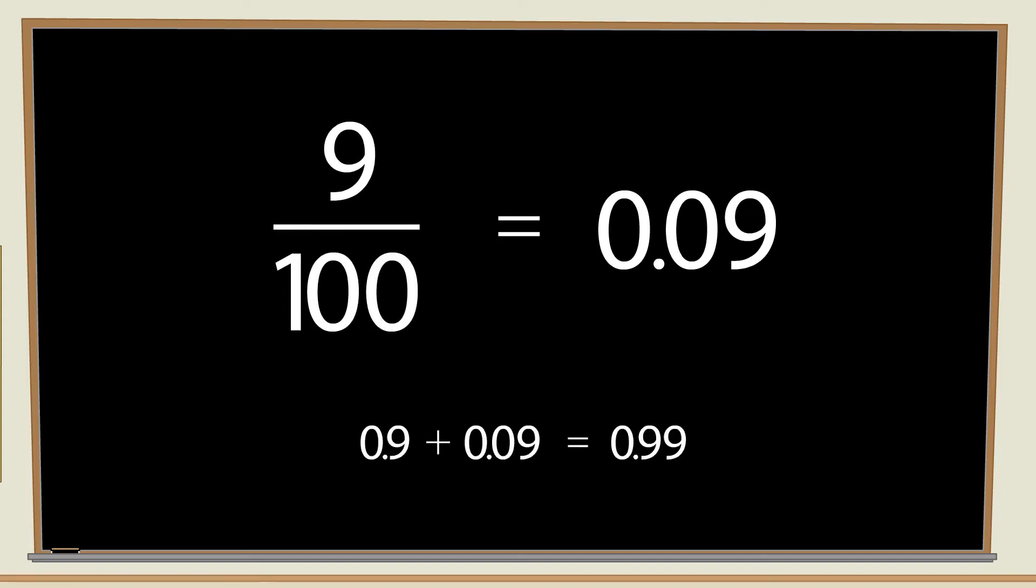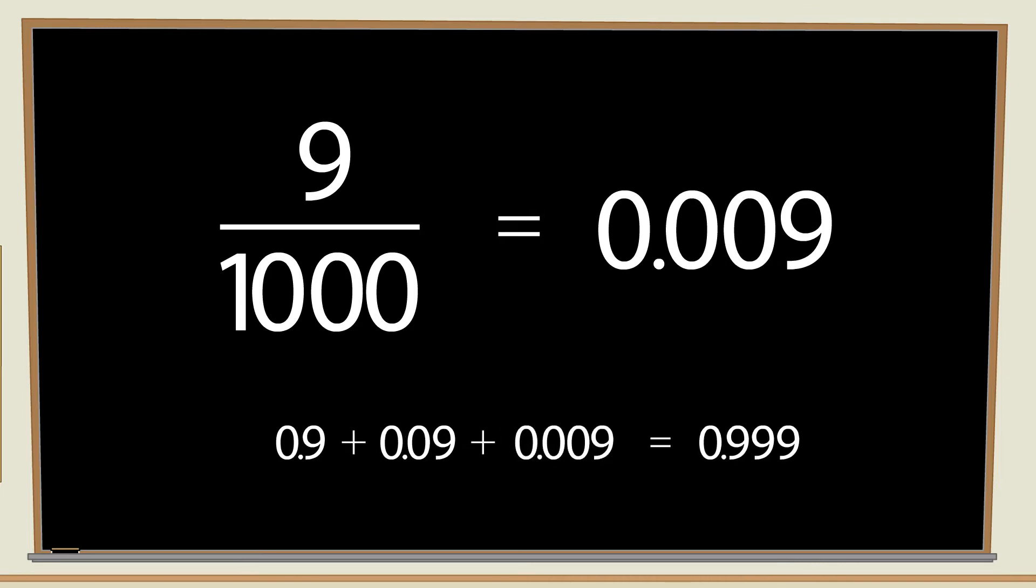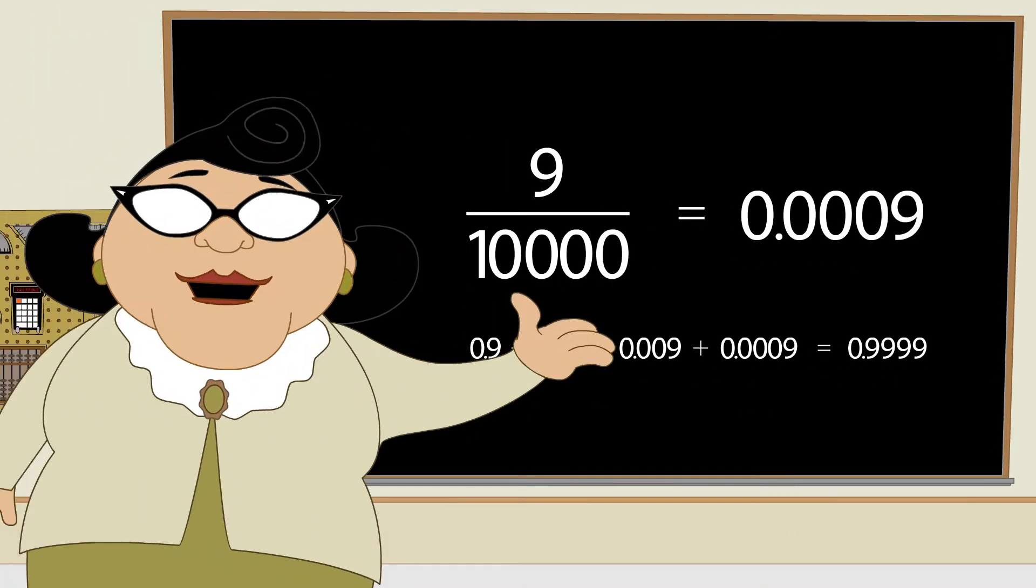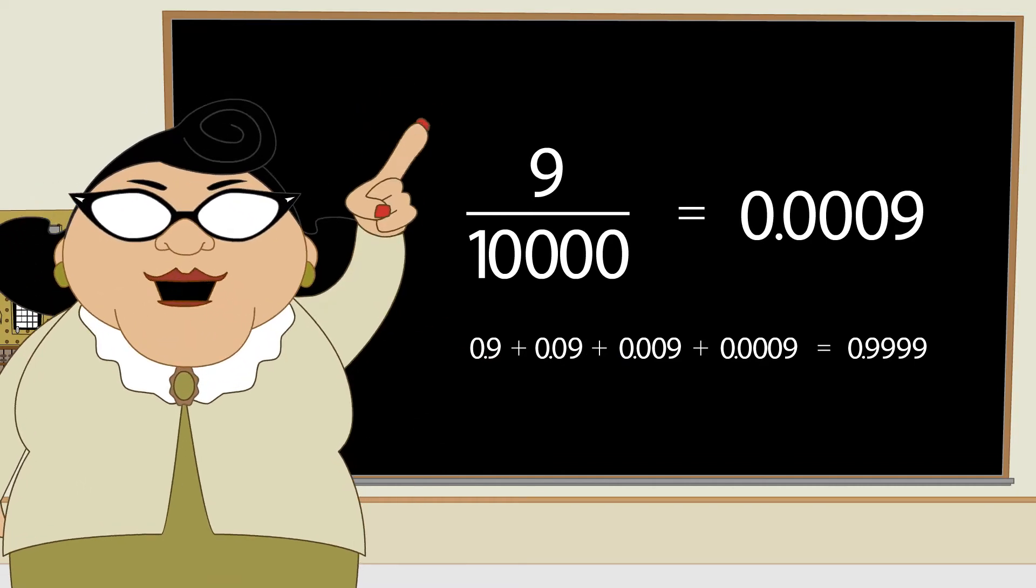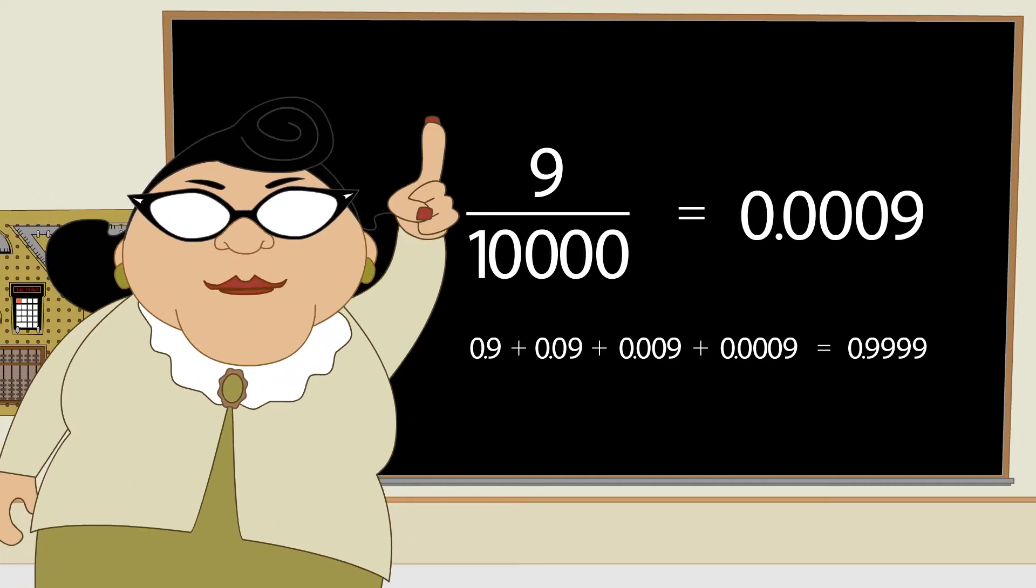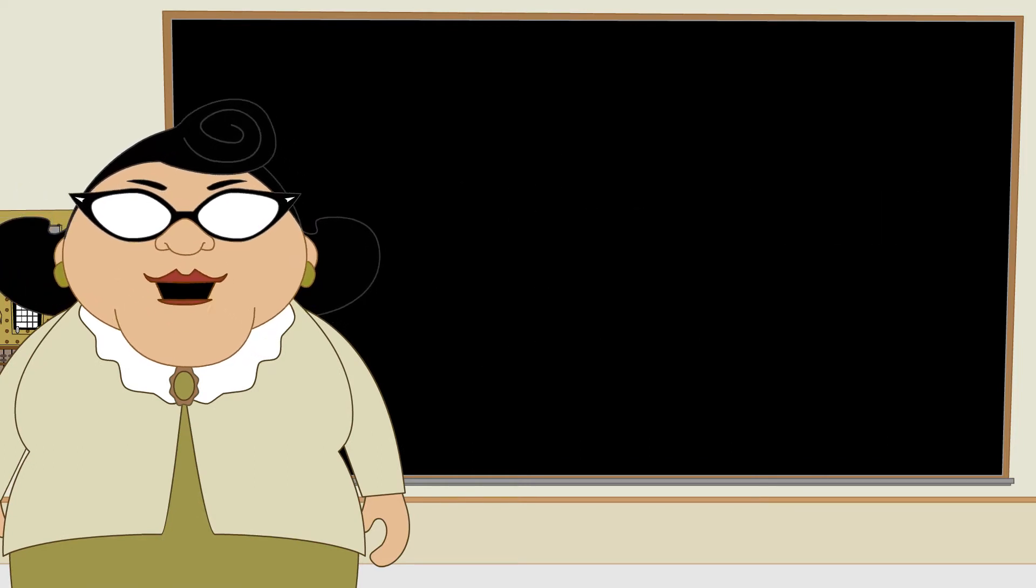Now, let's add nine-hundredths. And nine-thousandths. And so on. As you can see, we can keep doing this as long as you like. But you will never get a number bigger than one. We say the limit of this series of additions is one.